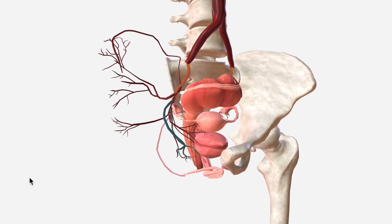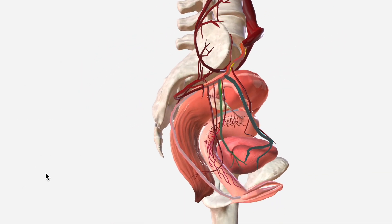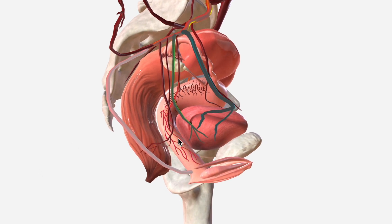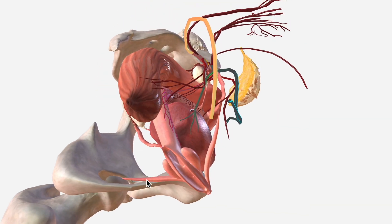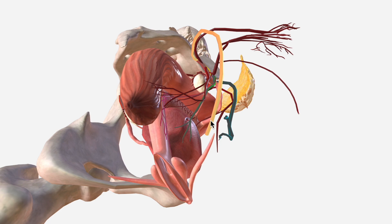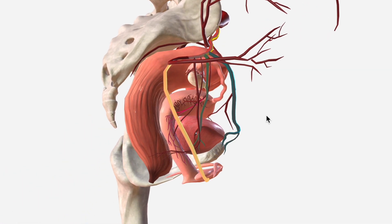Here are some of the pelvic viscera to help ground our arteries in context. We see the vaginal artery and the uterine artery, both contributing to the supply of the vagina and uterus. We see the inferior vesicle and superior vesicle arteries supplying the bladder, and the middle rectal artery supplying the rectum. The internal pudendal artery is crucial to the supply of the external genitalia and the perineum. The uterine artery also supplies the fallopian tubes and the ovaries.